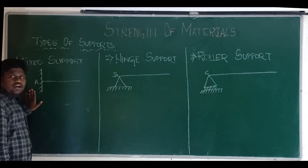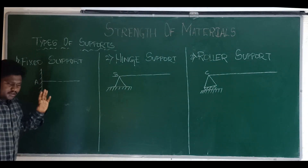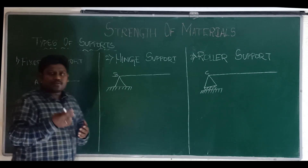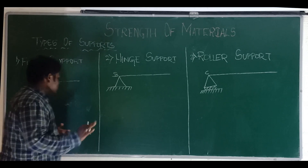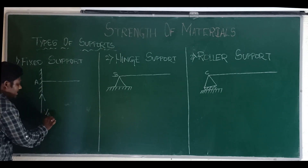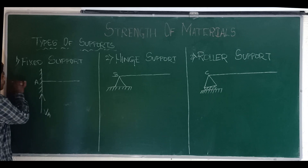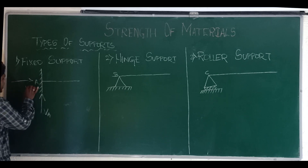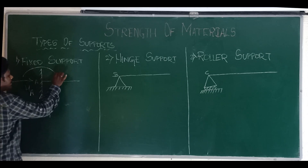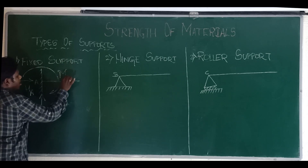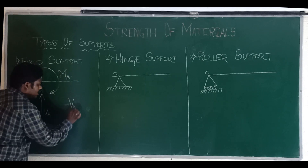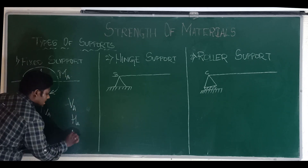This is the symbol we use for fixed support. When we have no movement in any direction, the reactions that would develop would be in three principal directions: the first one is a vertical force Va, the second is a horizontal force Ha, and the third is a rotational one — that is nothing but a moment. So fixed support will have a vertical force, a horizontal force, and a moment.